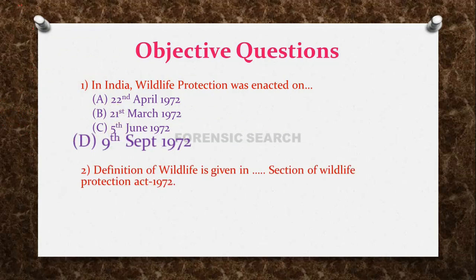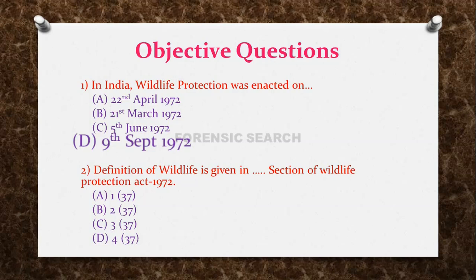Question 2: The definition of wildlife is given in which section of the Wildlife Protection Act 1972? Option A: Section 1, subsection 37; Option B: Section 2, subsection 37; Option C: Section 3, subsection 37; Option D: Section 4, subsection 37. The correct answer is Option B — Section 2, subsection 37 of the Wildlife Protection Act.